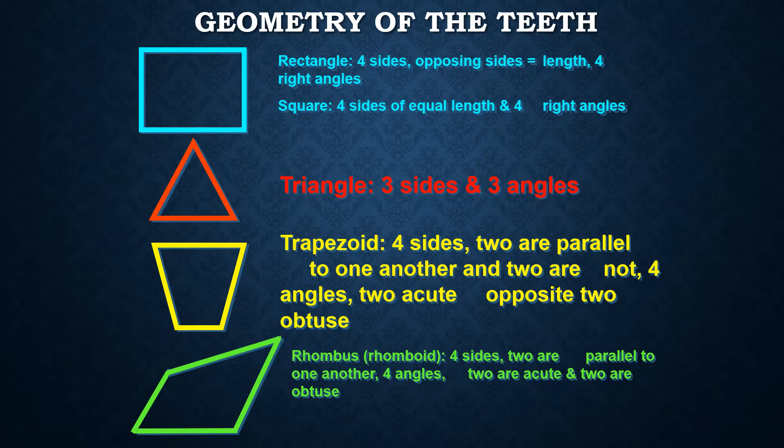A brief overview of the geometry of teeth. A rectangle has four sides where the opposing sides are equal in length and there are four right angles. While a square has four sides of equal length and four right angles.